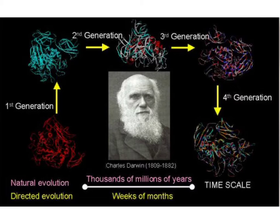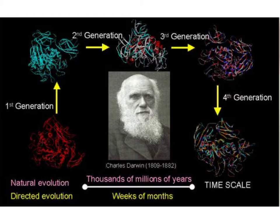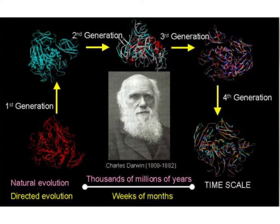This process of directed molecular evolution mimics natural evolution. Natural evolution, coined by Charles Darwin, takes a time scale of thousands to millions of years to go from one starting point to another. Directed evolution reduces this time scale to weeks or months, so you can go from a protein, introduce mutations, go to another protein, introduce another mutation, and constantly go through this iterative cycle to generate an evolved protein.